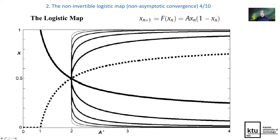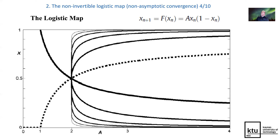When the parameter of the logistic map exceeds one, in the range between one and three, the stable fixed point is one minus one over eight. At three, the first period doubling bifurcation occurs. But in this plot, we focus on a period one orbit. The solid line shows the initial condition which results in the fixed point period one orbit in one forward time step, and the thinner the line, the higher the number of steps needed to reach the period one orbit non-asymptotically.